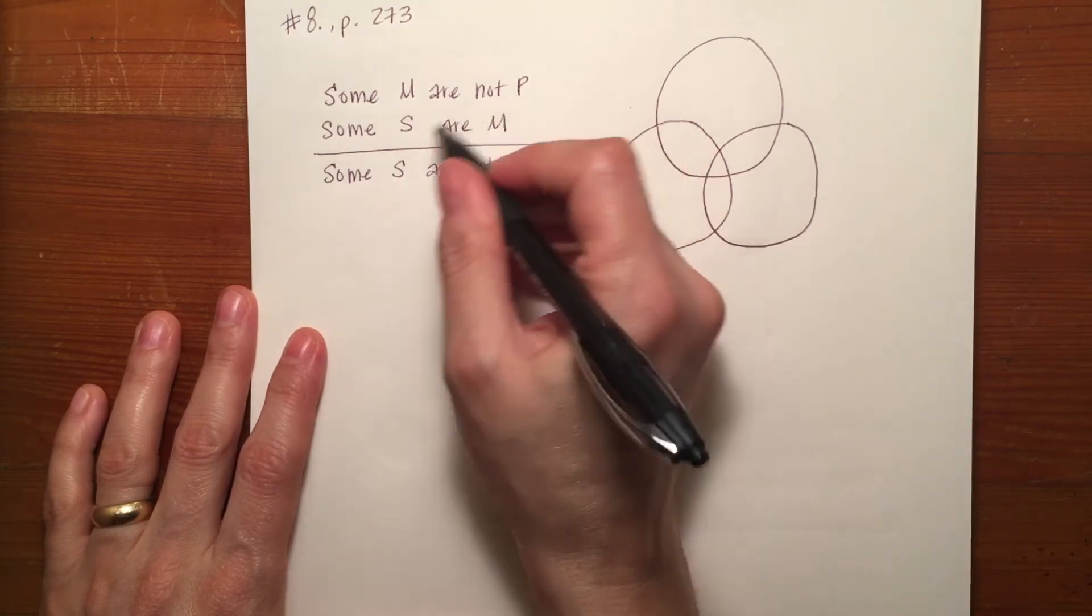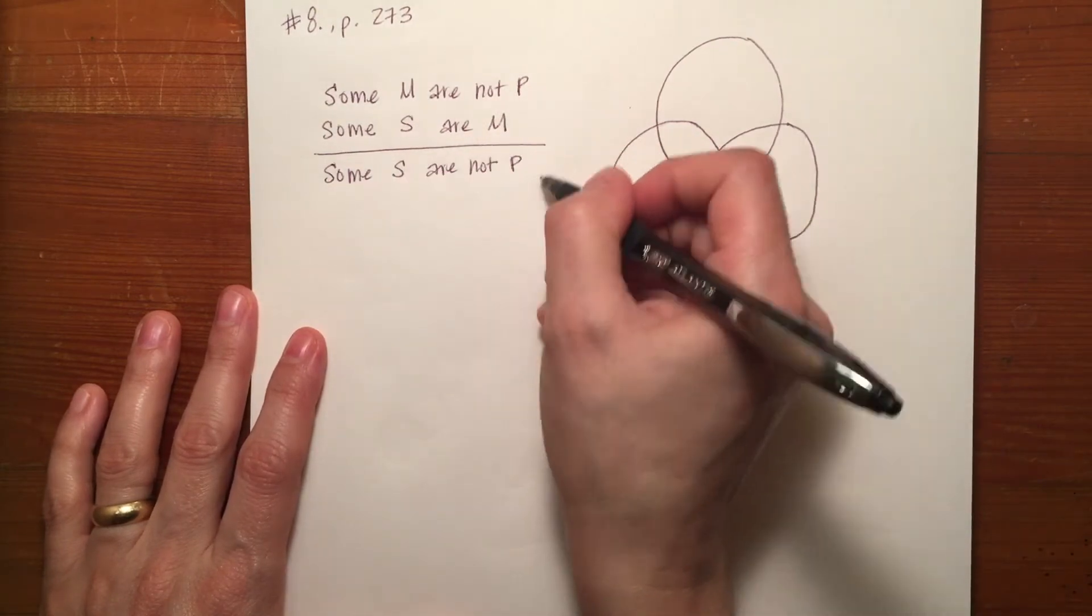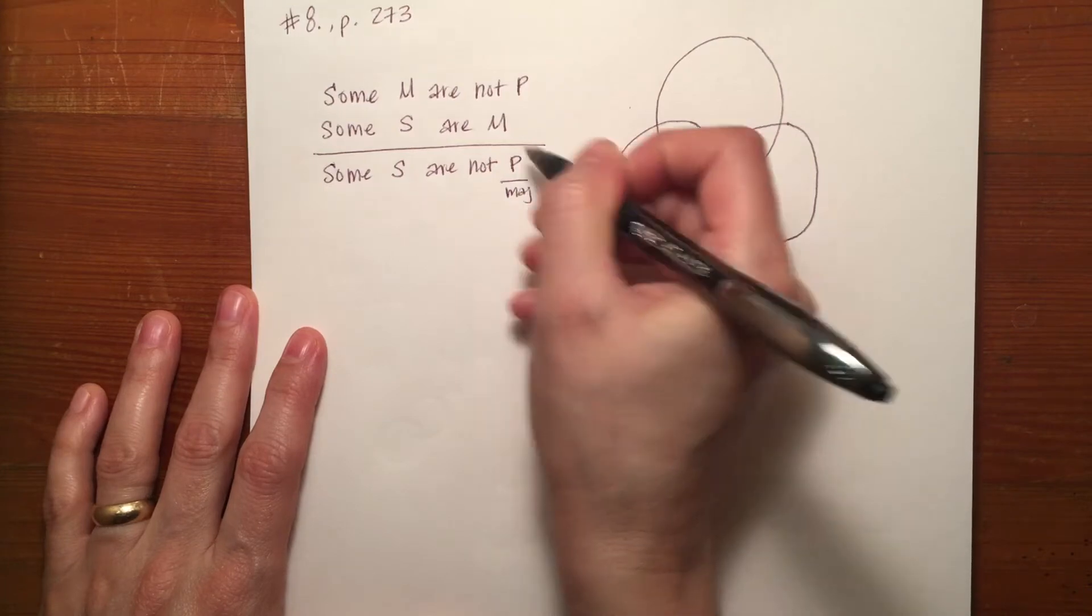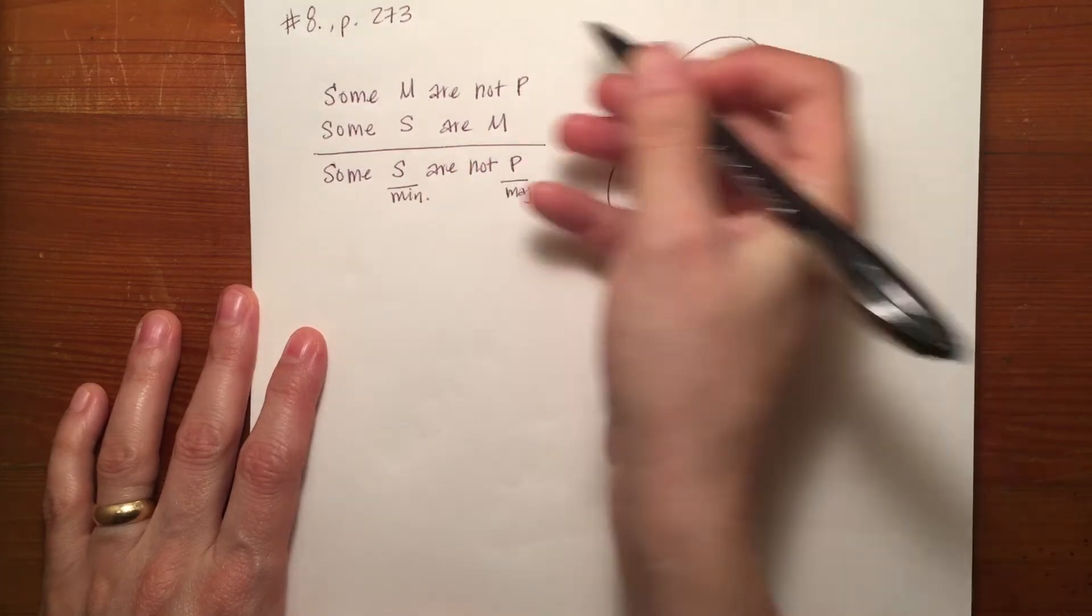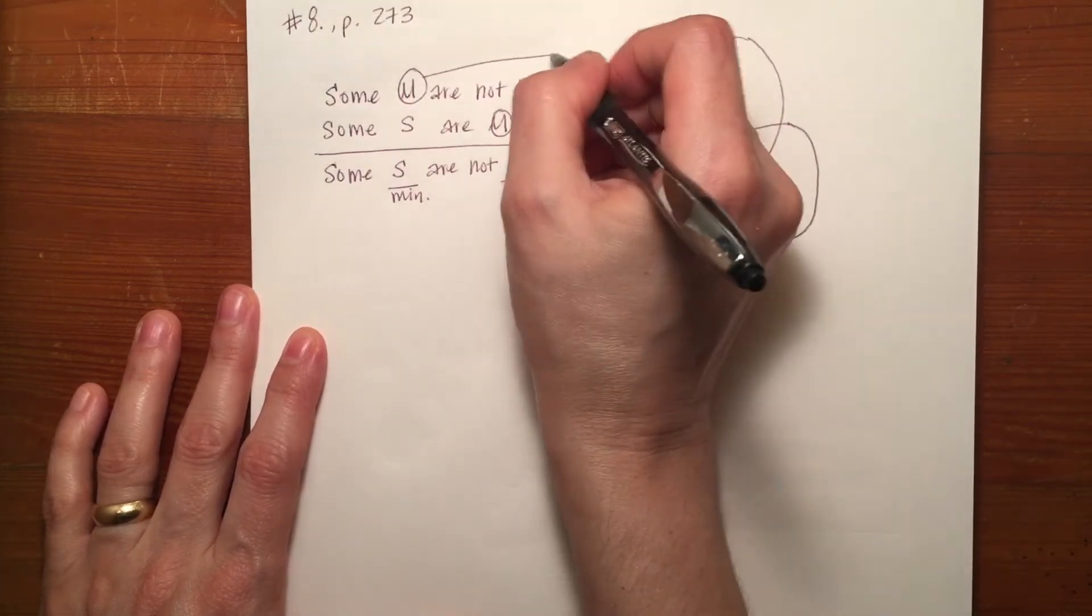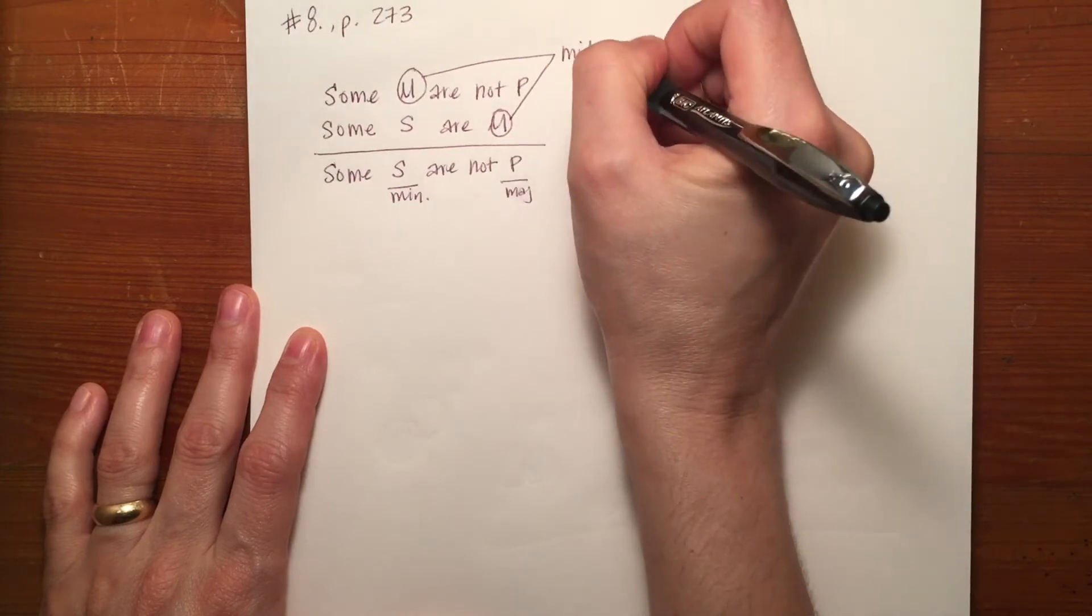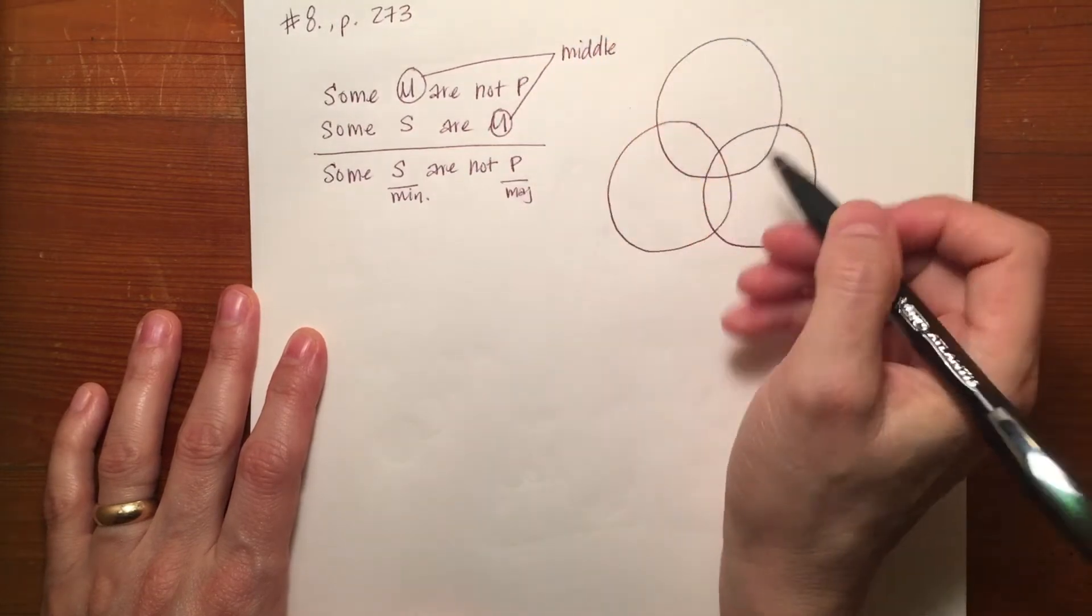Again they're giving you the S, M, and P so that you understand which one is the major term, which one is the minor term, and which one is the middle term, but these will be different depending on what the argument is.